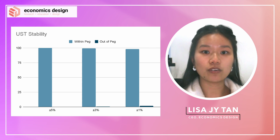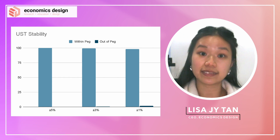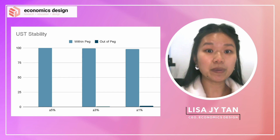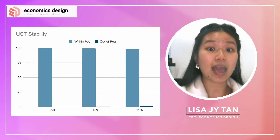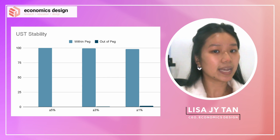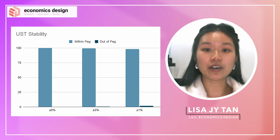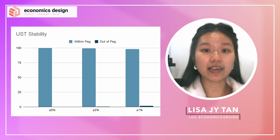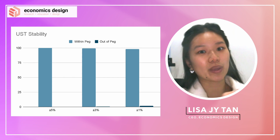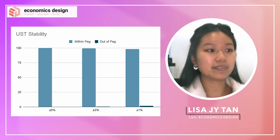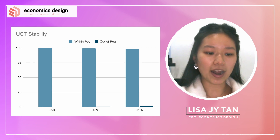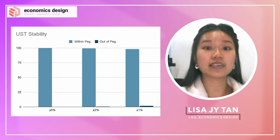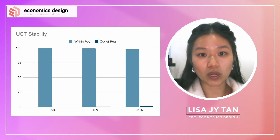Now, looking at the 3% range — because I want to reduce the range to understand stability even more — this means that if UST is within $0.97 and $1.03, it is considered pegged. In this analysis, we find that only 0.6% of days are out of peg. Given that the 5% band captures everything, it means that 0.6% of the time prices are either between $0.95 and $0.97, or between $1.03 and $1.05.